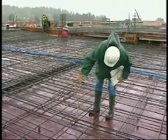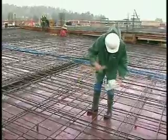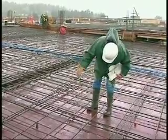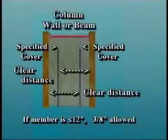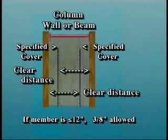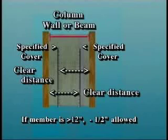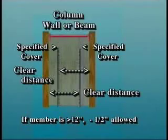ACI 117 also permits tolerances on concrete cover measured perpendicular to the concrete surface in the direction of tolerances. When the member size is 12 inches or less, 3/8 inch is allowed. When the member size is over 12 inches, this is increased to minus 1/2 inch. The reduction in cover shall not exceed 1/3 of the specified concrete cover, and the reduction in cover to form soffits shall not exceed 1/4 inch.